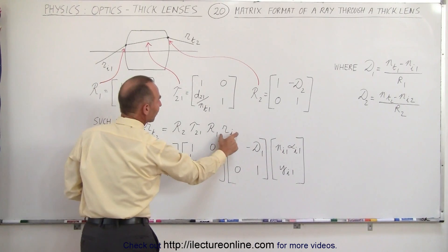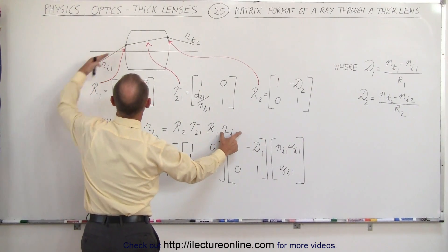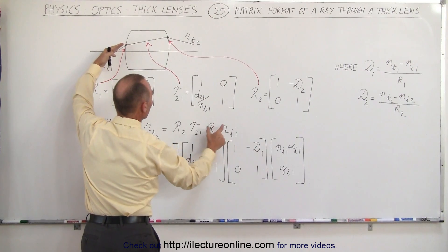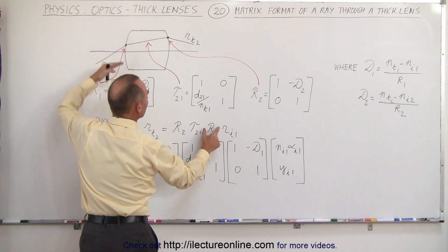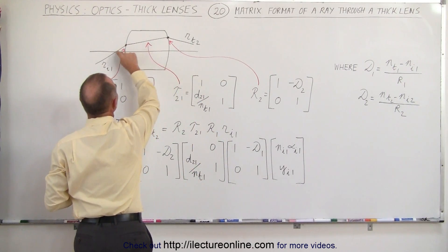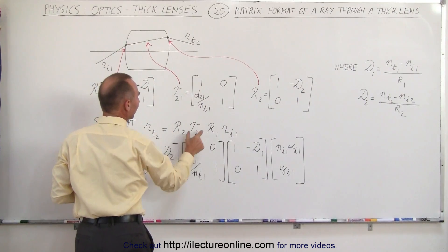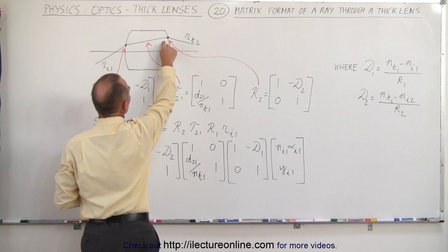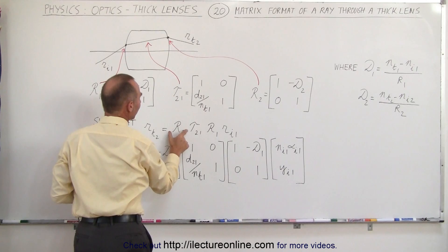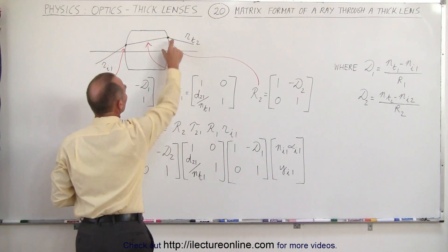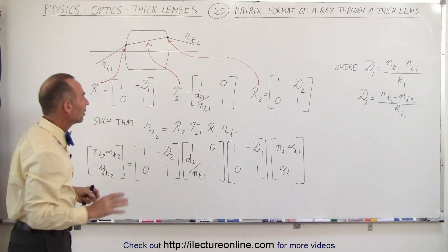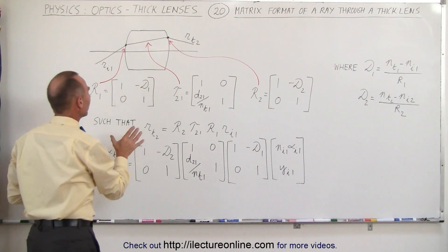We have the initial ray information here, the information about the boundary crossing, then the information about the transition from one boundary to the next, and finally the information across the second boundary — and notice the information contained within each of them.